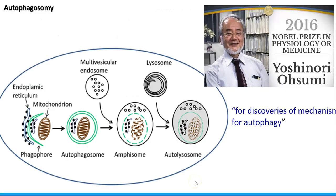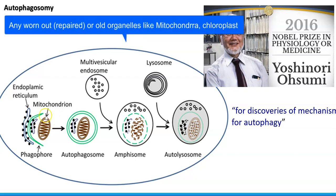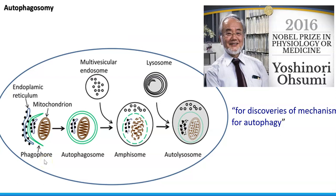Looking at the autophagy process: a worn-out organelle or old mitochondrion can be phagocytized by the autophagocytosis process. You can see an old mitochondrion engulfed within the membrane of the endoplasmic reticulum. The first stage is called phagophore formation, which is then converted into an autophagosome — a structure in which the whole content will be digested.